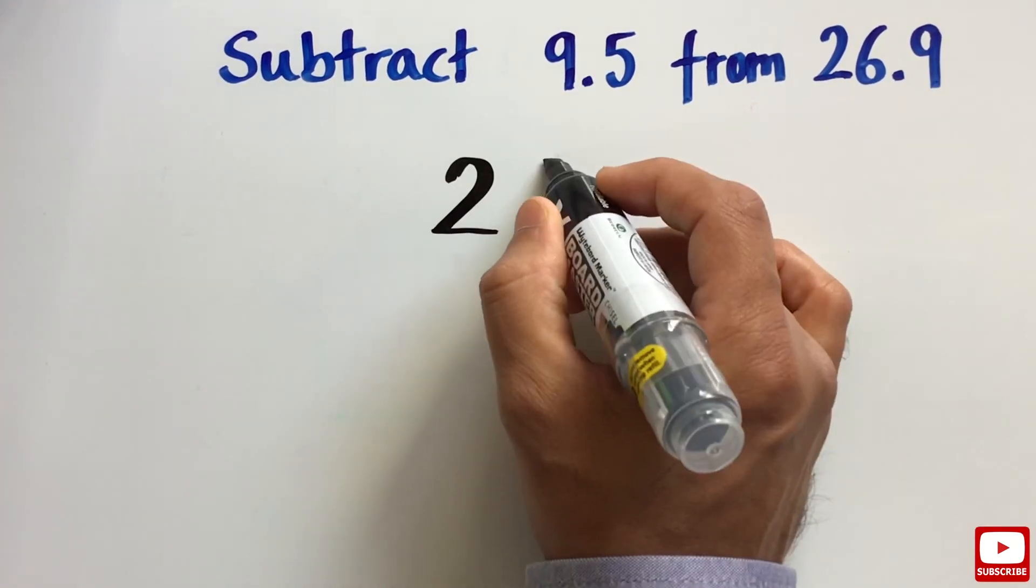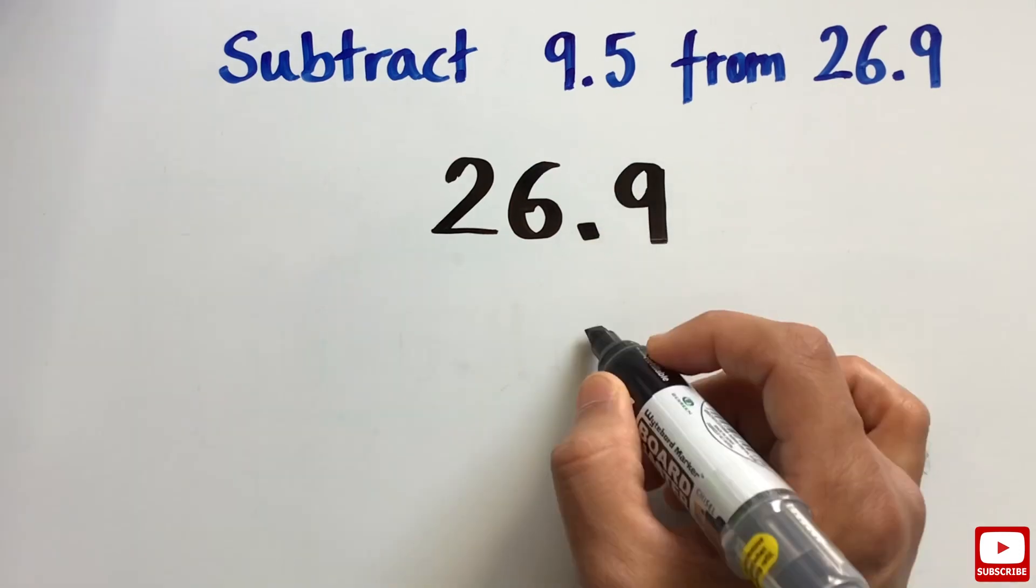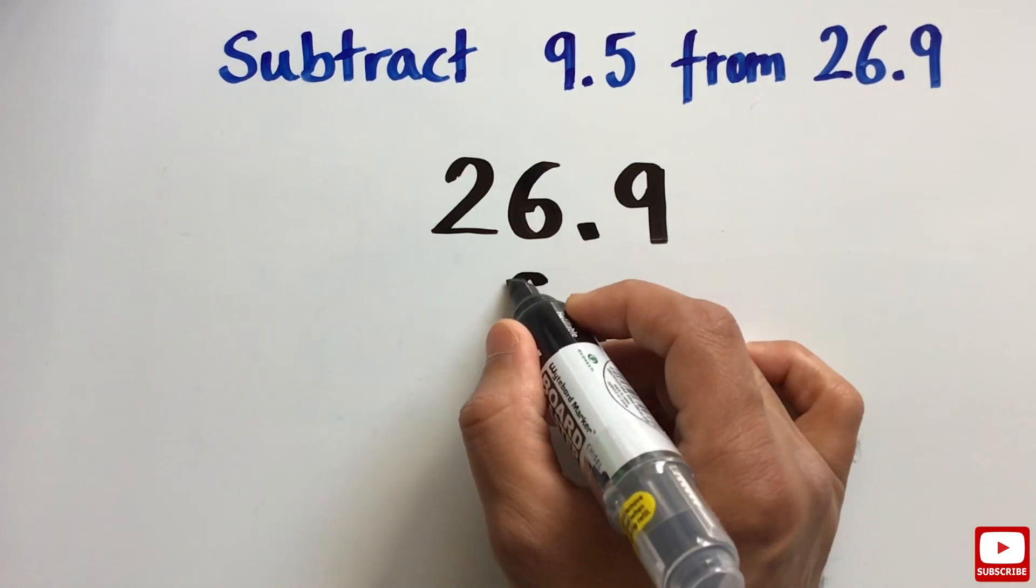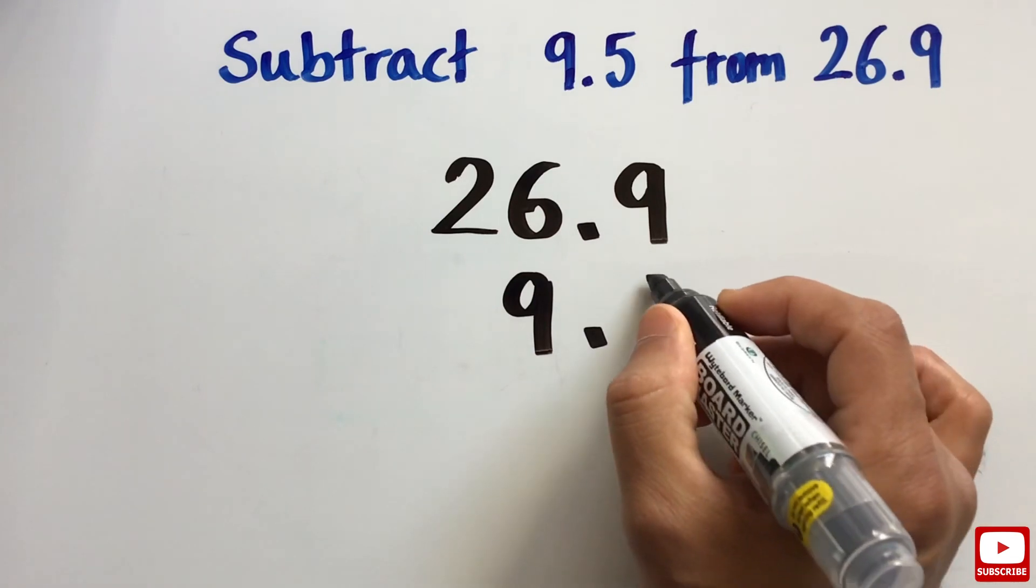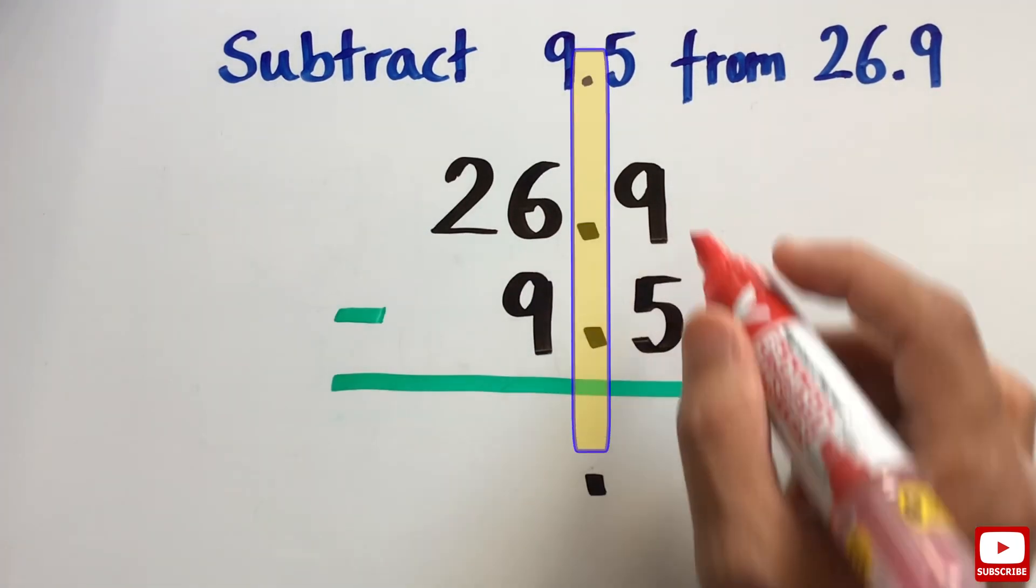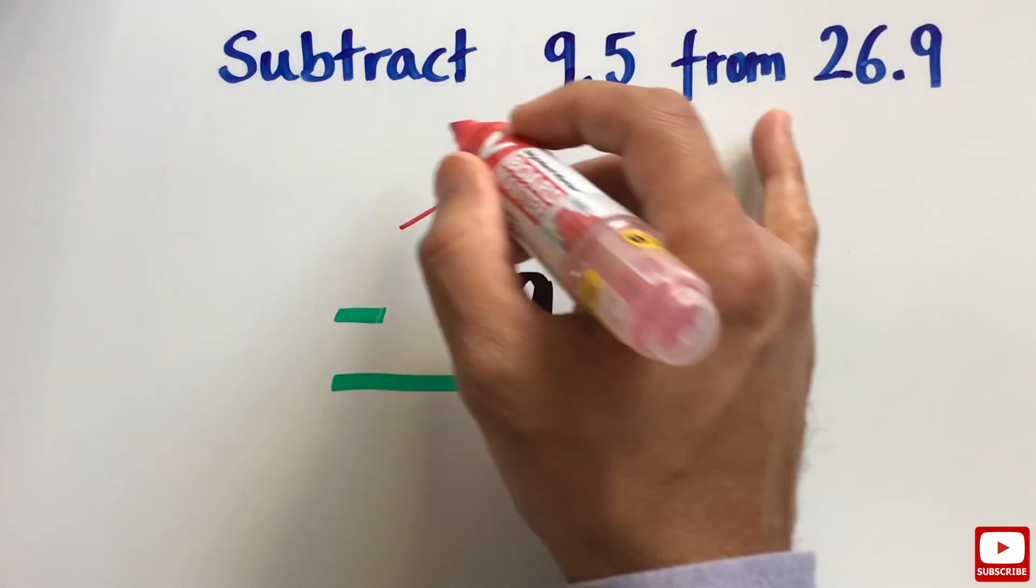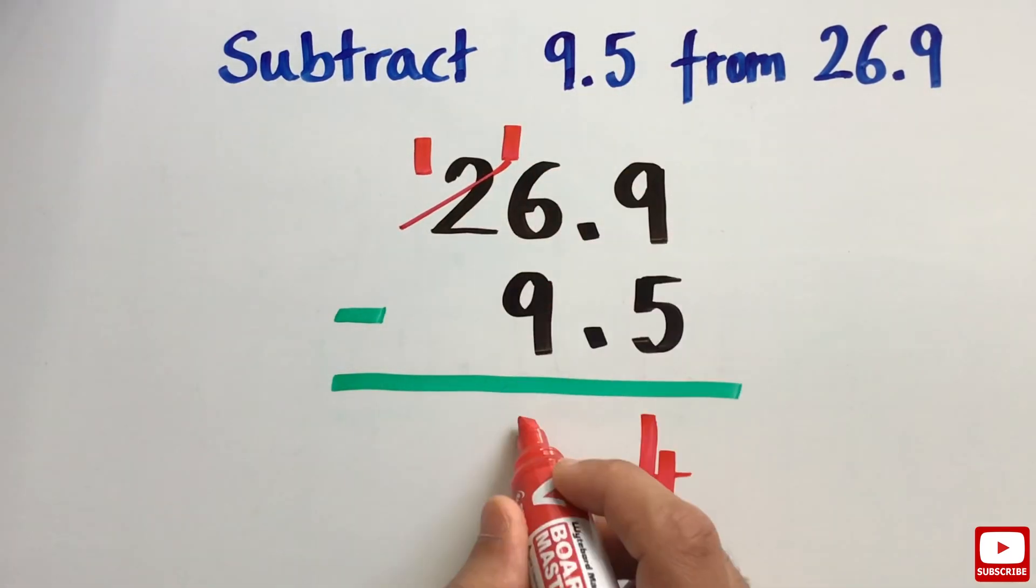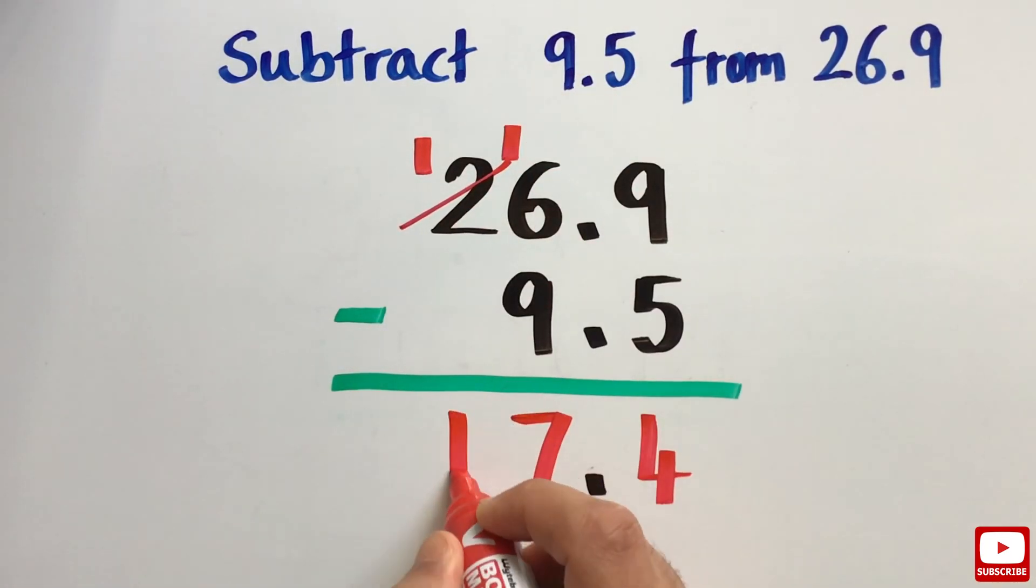So we write 26.9 on top, line up the decimal points and write the number 9.5 underneath so that the digits in each place value will also line up. Once we line up the decimal point in the answer, we subtract moving from right to left the way we do it with whole numbers.